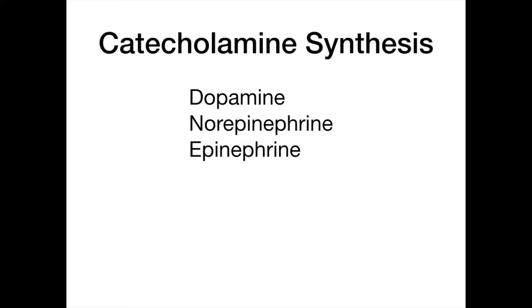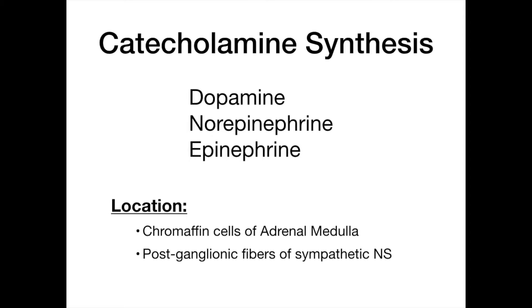If you've not made that association in your brain yet, now's the time to begin. Catecholamine is a fancy way of saying neurotransmitter — specifically, we're talking about three substances that act in the sympathetic or adrenergic nervous system: dopamine, norepinephrine, and epinephrine. These molecules are synthesized in the chromaffin cells of the adrenal medulla, but they're also produced in the post-ganglionic fibers of the sympathetic nervous system.